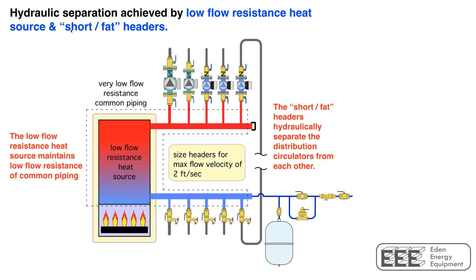My suggestion when sizing headers in a system like this with five circulators: assume they're all on simultaneously — which they could be under design load — figure out the total flow rate, and then size your header for a flow velocity that doesn't go above two feet per second. That's definitely going to be at least one pipe size larger than what you might be used to, but that is the concept of keeping head loss to an absolute minimum. If you do that, you don't need closely spaced T's and you don't need a separate component called a hydraulic separator, because the heat source and headers in combination are doing it for you.